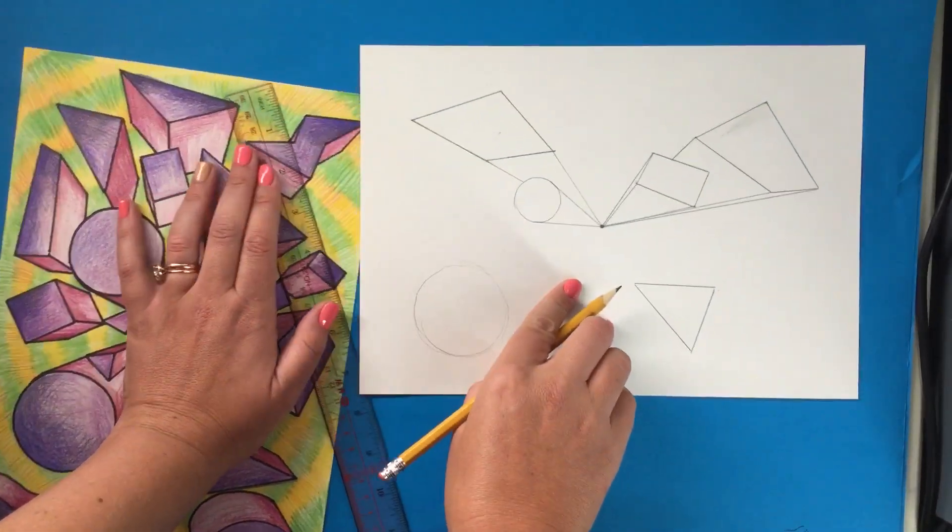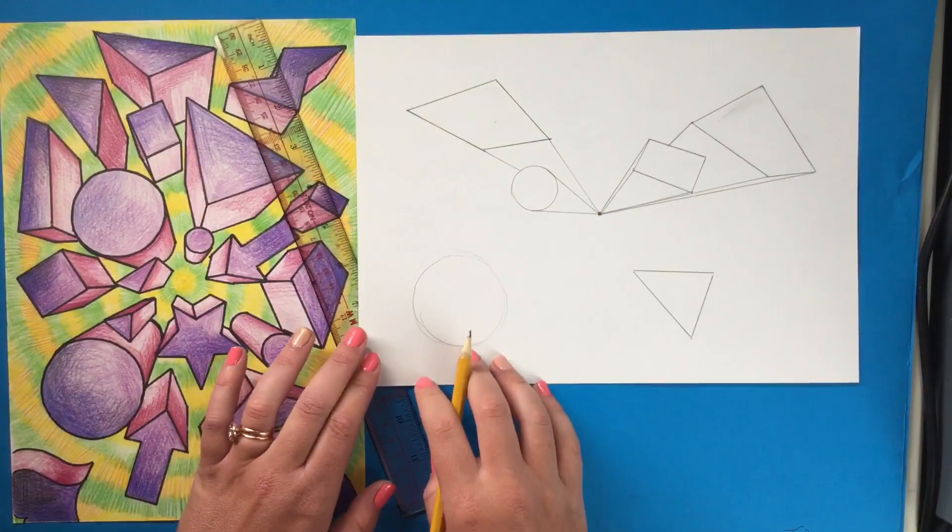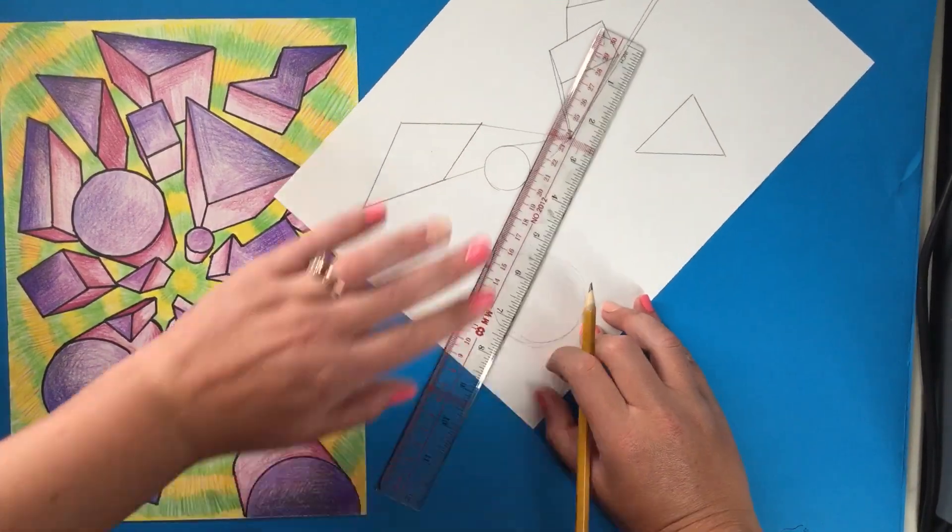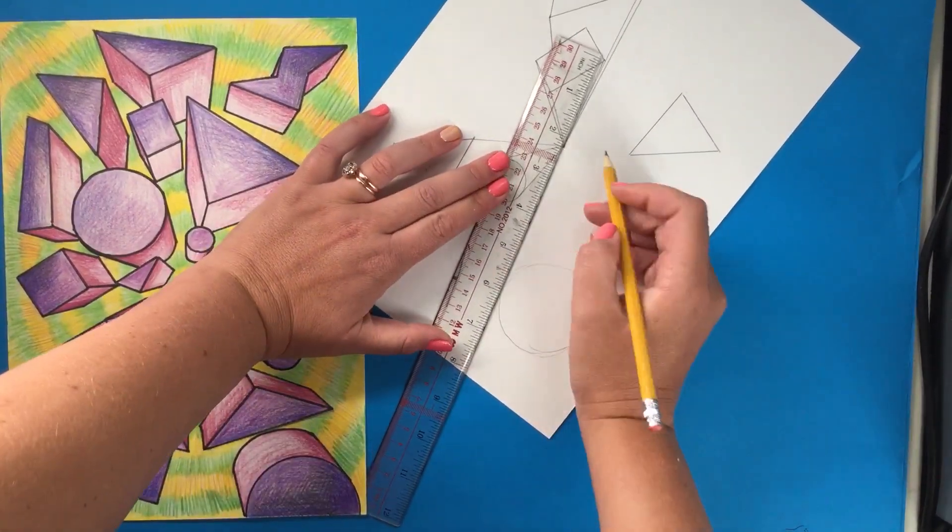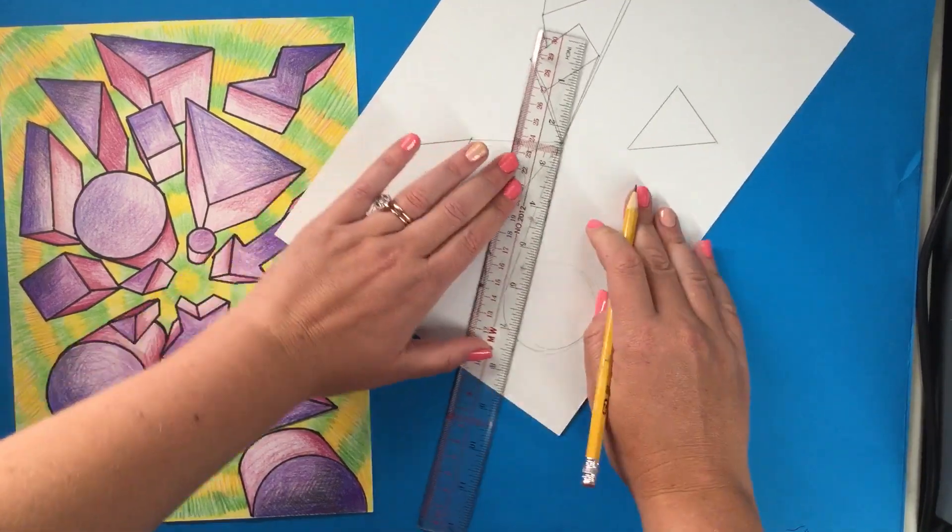This one is real small of a sliver, but it is still there. Okay, boys and girls, now, once you get to the point where you have done all of your shapes and they all go down to the point perspective, the next thing to do is to cut off your shapes.